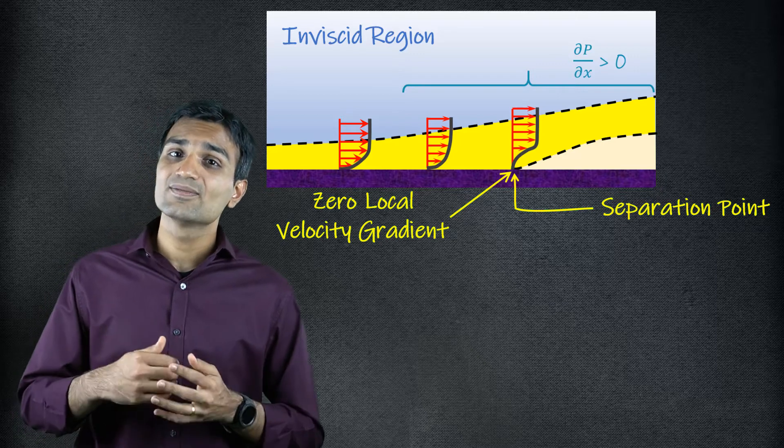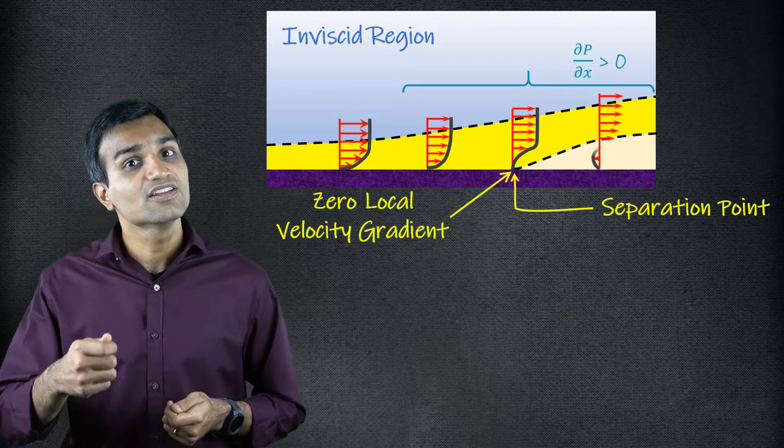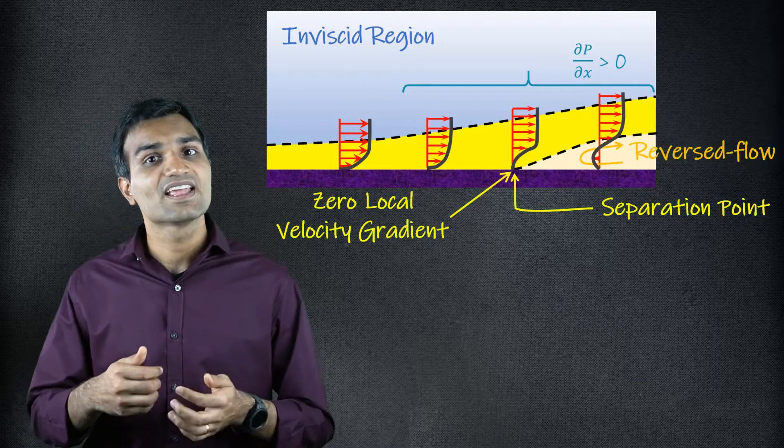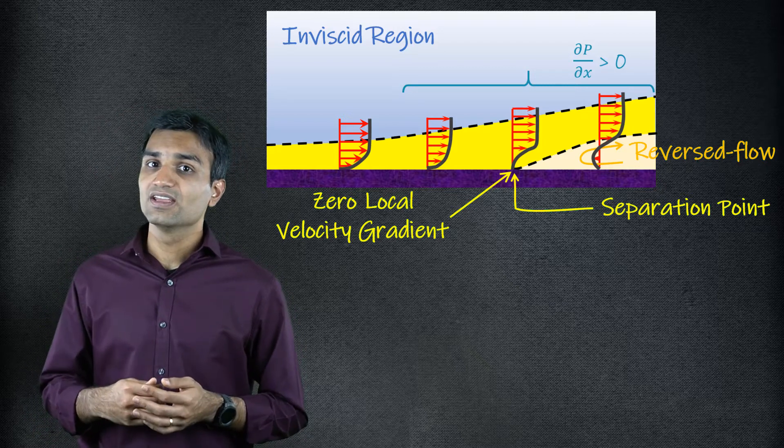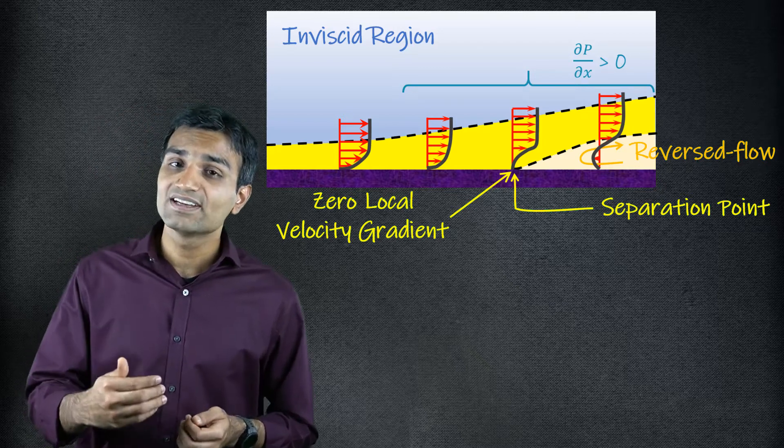Beyond the separation point, a reverse flow occurs near the surface and the velocity gradient becomes negative. The streamlines following the surface of the body are deflected away from the body. The separation point is defined using wall shear stress profile along the flow. The location along the surface where wall shear stress becomes zero is regarded as the point of separation. Beyond this point, owing to local flow reversal, the wall shear stress changes direction.